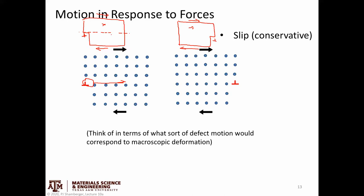You could also think about what would happen if the shear direction were reversed. Not surprisingly, if the direction of shear is reversed, the direction of motion of the edge dislocation would also be reversed.